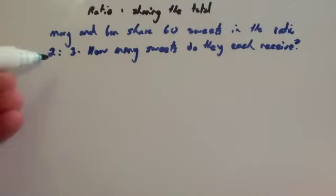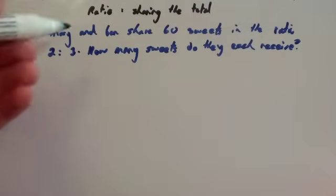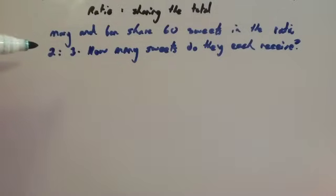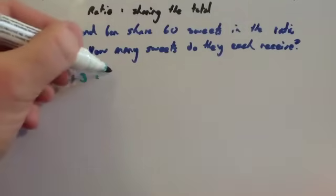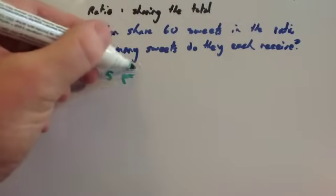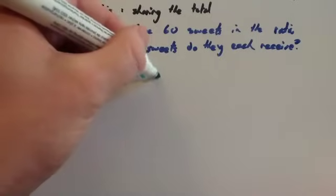So let's find out, if we do 2 parts and 3 parts, let's see how many parts that would be all together. Step 1 is you add the values in the ratio. So you're going to do 2 plus 3. 2 plus 3 equals 5 parts in total.